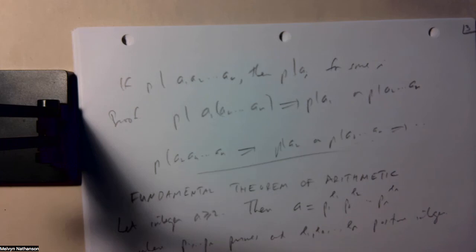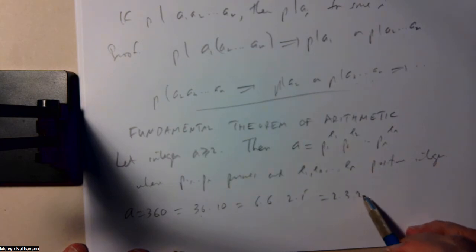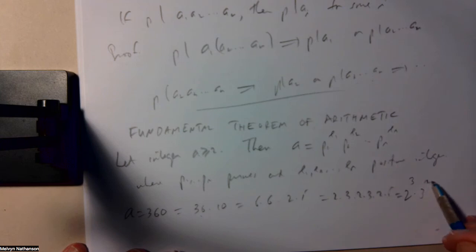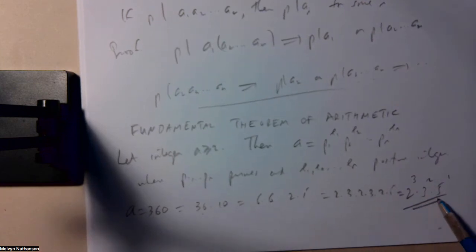For example, if you let a be equal to 360, you can factor that. This is, for example, 36 times 10. 36 is 6 times 6, and 10 is 2 times 5. 6 is 2 times 3, 6 is 2 times 3, 2 times 5. I have 3 2s, 2 cubed. I have 2 3s, 3 squared, and 1 5, or 5 to the first power. So this is the representation of 360 as a product of powers of prime numbers.